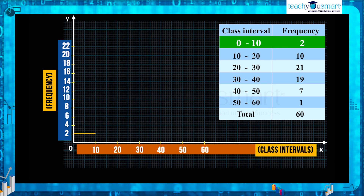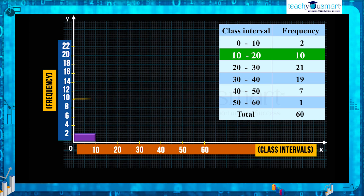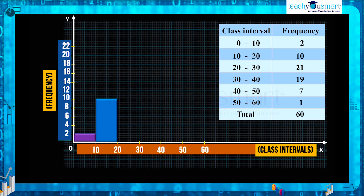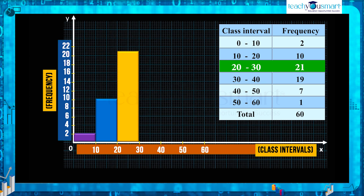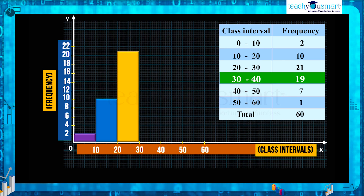Now draw the bars for the corresponding frequencies. In 0 to 10 there are 2 students, so draw a bar of height 2. In 10 to 20 there are 10 students, so draw a bar of height 10. Then in 20 to 30 there are 21 students, so draw a bar of height 21.